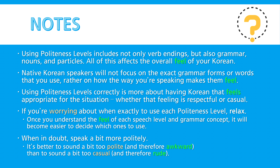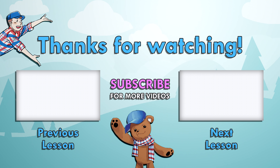Next misconception: 'I just use casual speech with my friends regardless of their age.' Well, in most friendships where one person is older, native speakers will feel much more comfortable when the younger person speaks politely to the older person — for example by using the 요 form — while the older person speaks casually. This can even include some couples, but it all depends on many factors, which we'll learn about in this course.